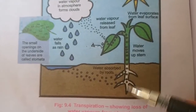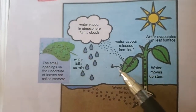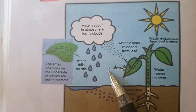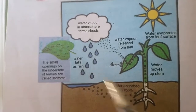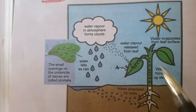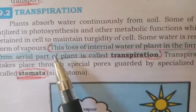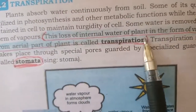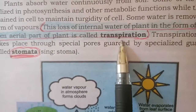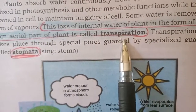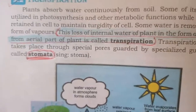Roots کے ذریعے water اس وقت تک absorb نہیں ہوگا جب تک کہ water transpiration کے ذریعے leaves سے باہر نہ نکلے۔ جتنا پانی باہر نکلے گا، جتنی transpiration زیادہ ہوگی، اتنا ہی water plant کے اندر absorb ہوگا۔ Definition دوبارہ پڑھئے: the loss of internal water of plant in the form of vapor from the aerial part of plant is called transpiration.